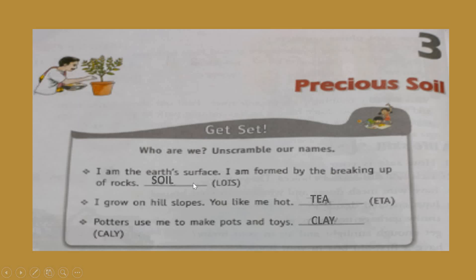In the beginning of the lesson you will see these 3 points — 'Who are we? Unscramble our name.' First: I am the earth's surface, I am formed by the breaking up of rocks. The correct answer is soil. You can rearrange these alphabets.